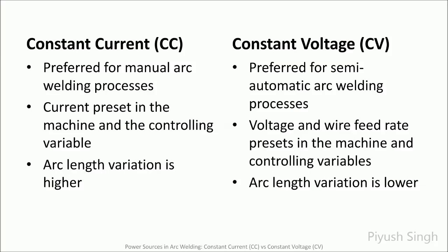If constant voltage output is used for a manual process like shielded metal arc welding, current and the resulting melt-off rate would vary too much. As the electrode travels along the joint, the melt-off rate would be continuously changing. The welder would constantly need to change the rate at which he or she fed the electrode into the joint. This is an impracticable condition, making constant voltage output undesirable for manual processes.